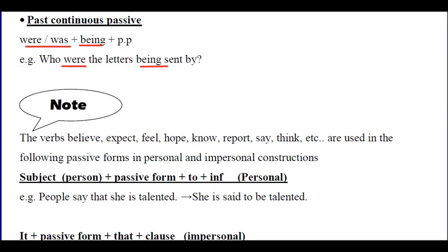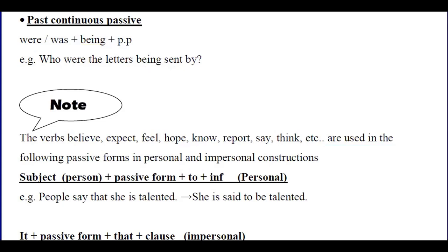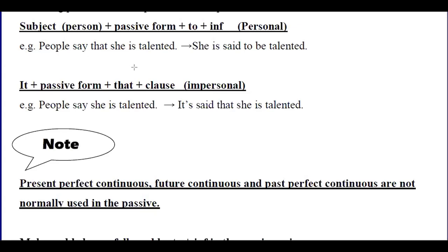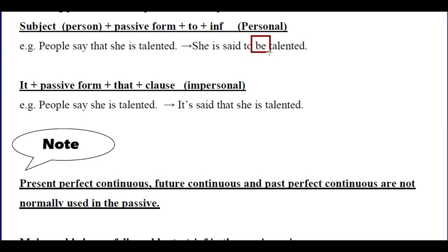Verbs like believe, expect, feel, hope, report, say, and think are used in personal and impersonal passive constructions. For example: 'People say that she is talented.' Starting with the subject 'she': 'She is said to be talented.' Starting with 'it': 'It is said that she is talented.'